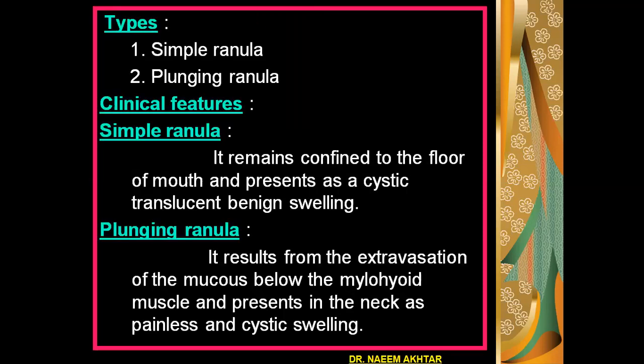There are two types of ranula: number one is the simple ranula, and second is the plunging ranula. In a simple ranula, it remains confined to the floor of the mouth and presents as a cystic translucent benign swelling in the floor of mouth, above the mylohyoid muscle. In a plunging ranula, it results from extravasation of mucus below the mylohyoid muscle and presents in the neck as a painless cystic swelling.